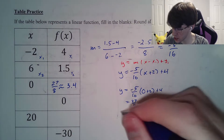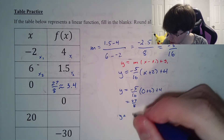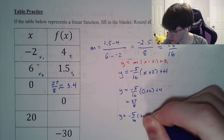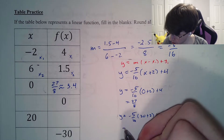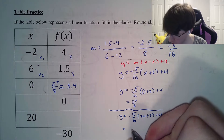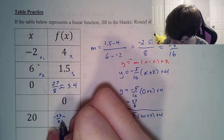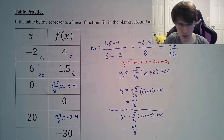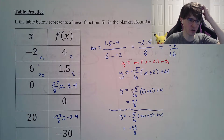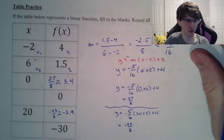We'll do the same thing for the value of 20. When we plug in 20: negative 5 over 16 times 20 plus 2, plus 4. You'll end up with negative 23 over 8, which is approximately negative 2.9. I do prefer the fraction, though I think it's probably the better overall answer.